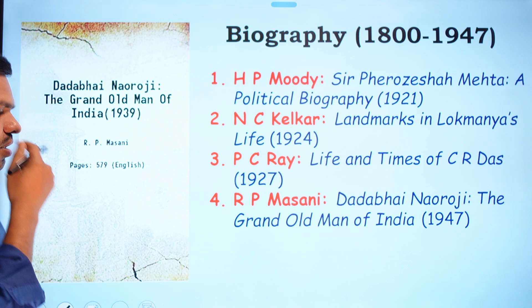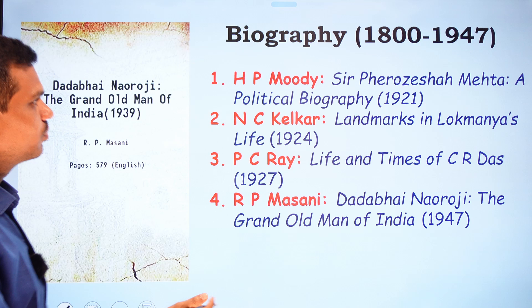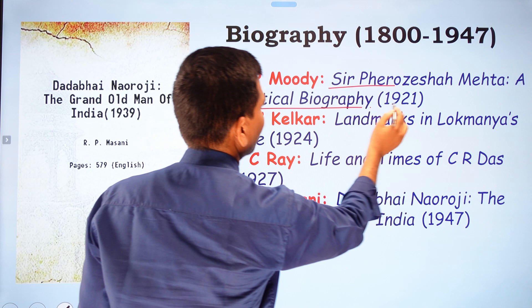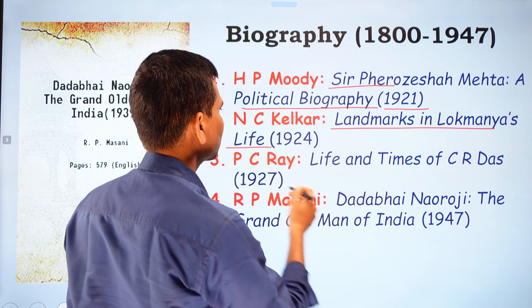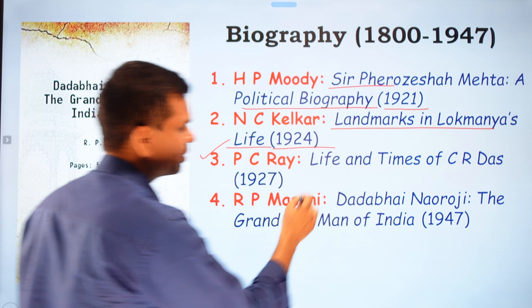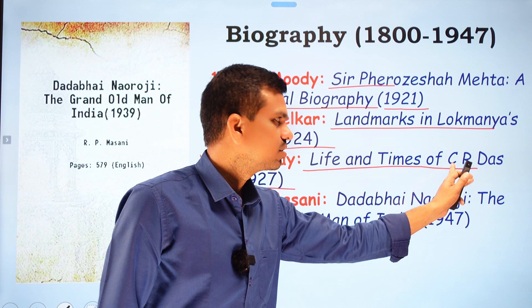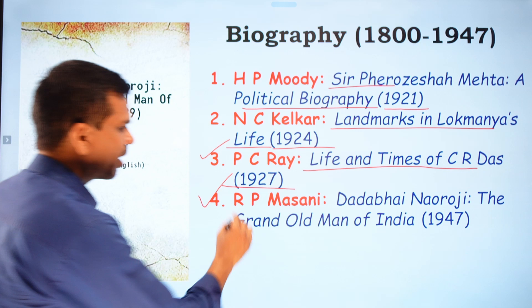Now let's talk about the development of biography in this period. H.P. Mody wrote a political biography of Sir Pherozeshah Mehta, published in 1921. N.C. Kelkar wrote Landmarks in Lokamanya's Life, based on Lokmanya Tilak's life (1924). P.C. Ray wrote Life and Times of C.R. Das.